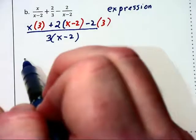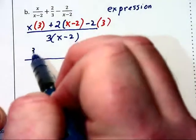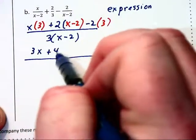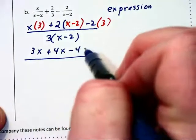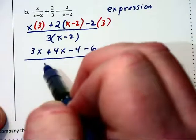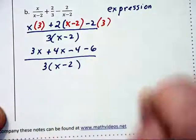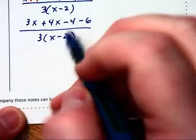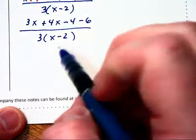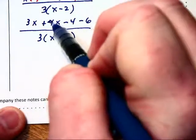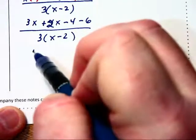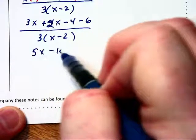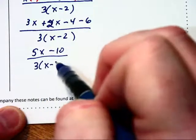Let's simplify this numerator. We're going to have 3x + 2x - 4 - 6, all over 3(x - 2). We will then combine like terms in the numerator. This will be 5x - 10 over 3(x - 2).